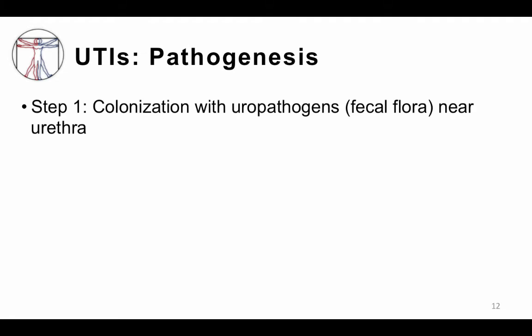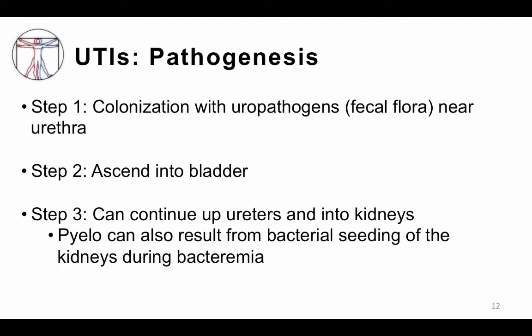The pathogenesis of UTIs starts with colonization with uropathogens, which are typically fecal flora near the urethra. Uropathogens are bacteria that have a predilection for attaching to the urinary epithelium. Bacteria can enter the bladder following intercourse, but are usually washed away by urination and host defenses. Fecal flora that remain will ascend into the bladder and can continue up to the ureters and into the kidneys. Pyelo can also result from bacterial seeding of the kidneys during bacteremia or bloodstream infections — one mechanism whereby Staph aureus can cause pyelonephritis.